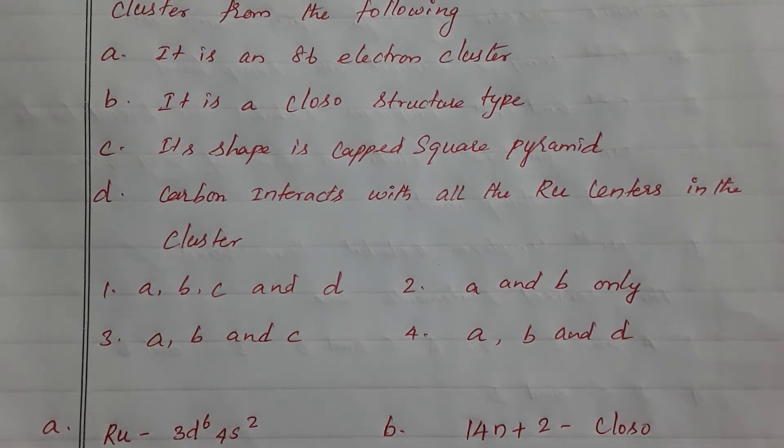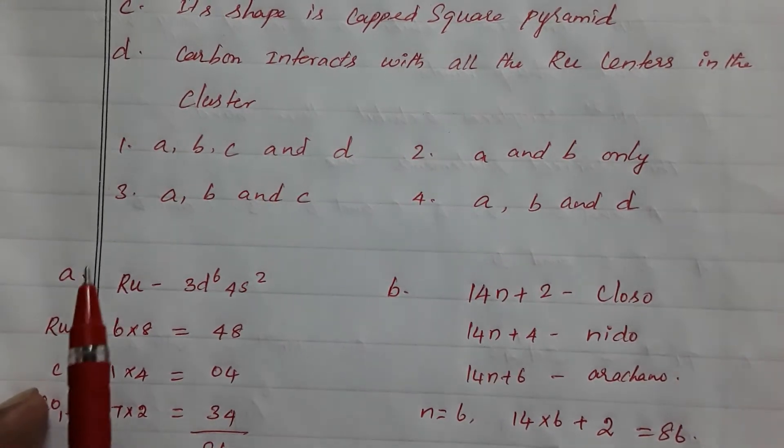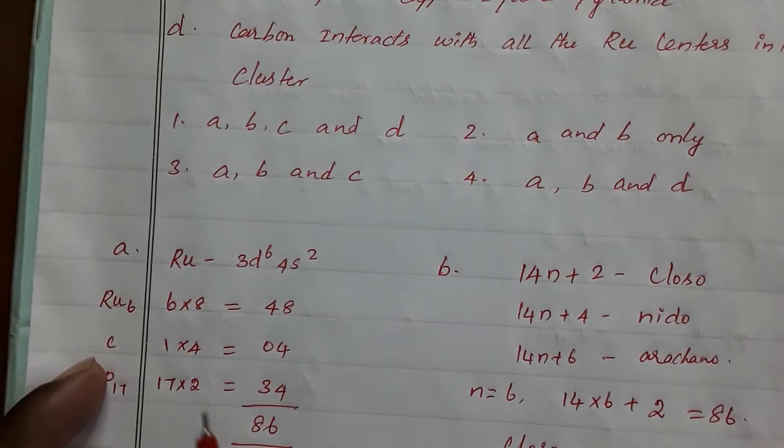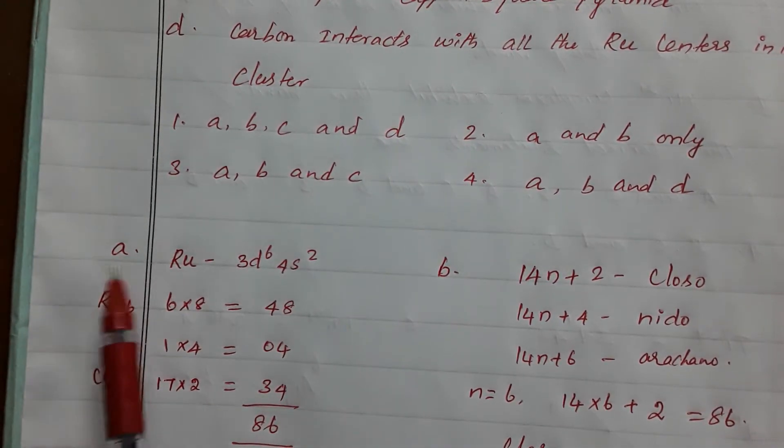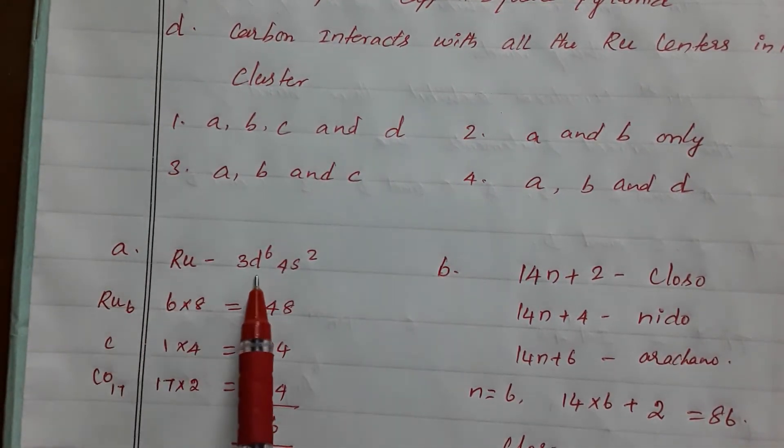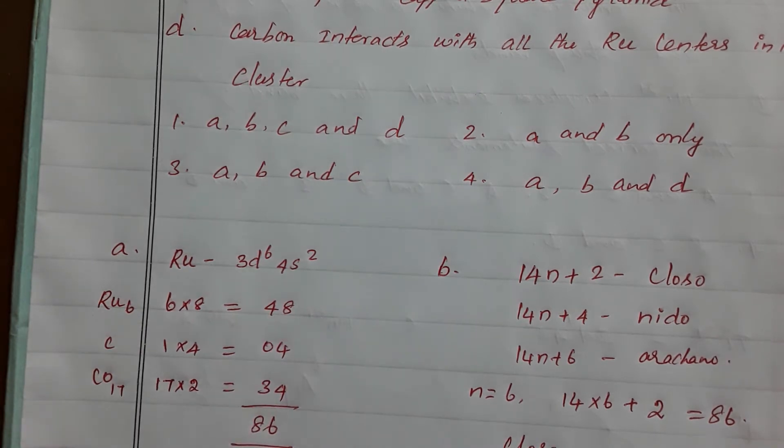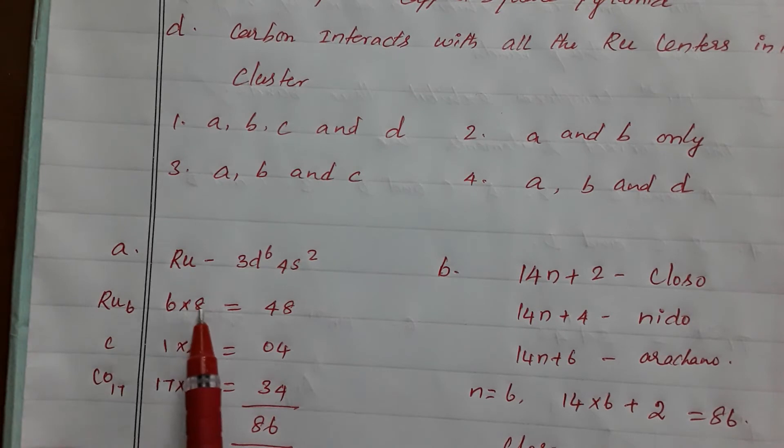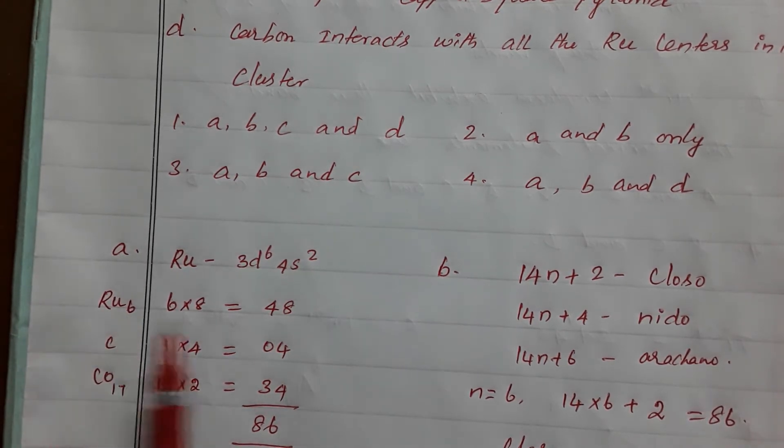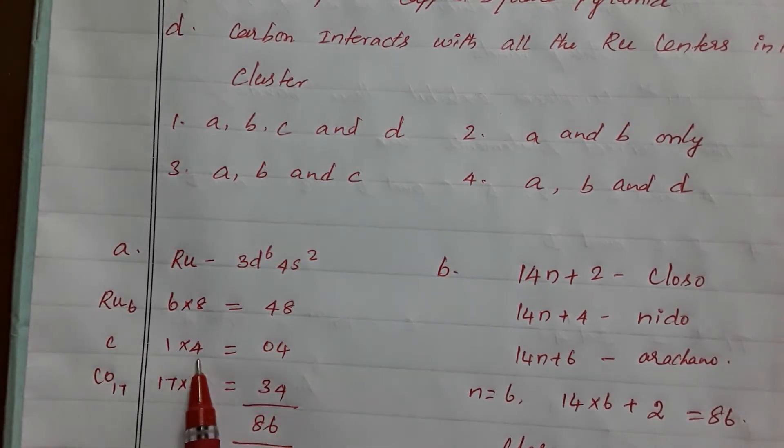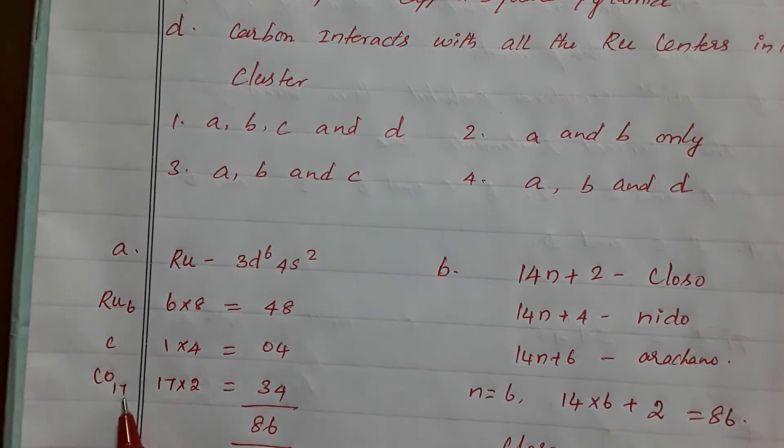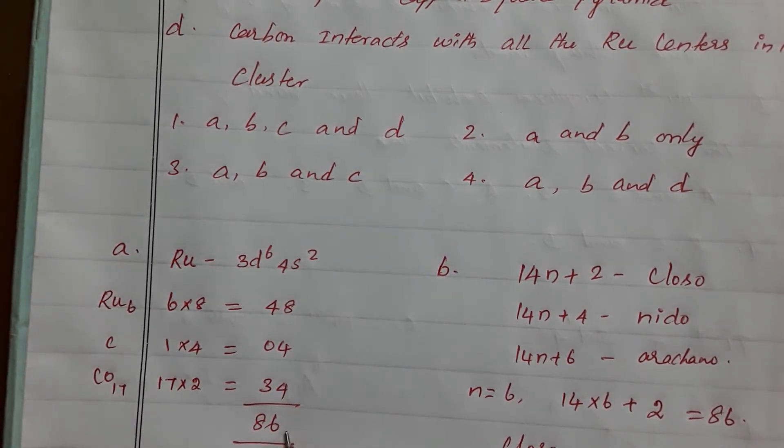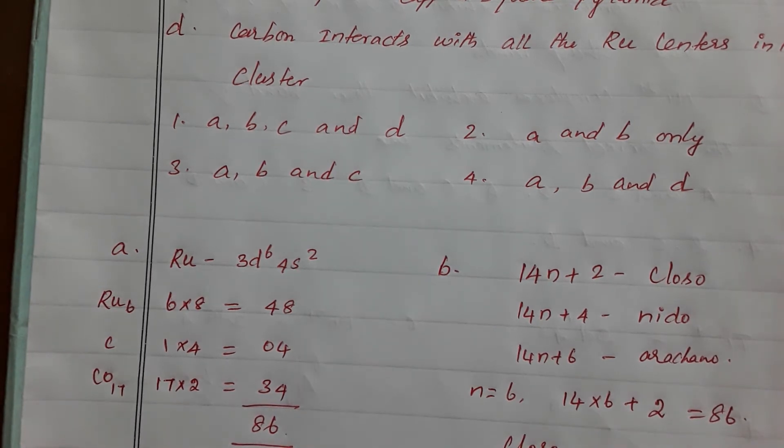First we check the statements. Statement A: ruthenium is 86 electron cluster. Ruthenium electronic configuration, it is down to the group from iron, so it is 3d6 4s2. Total electrons is 8. Ruthenium total is 6, so 6×8=48. One carbon contributes 4 electrons. 17 CO, so 17×2=34. Total electrons is 86. So it is an 86 electron cluster. It's correct.